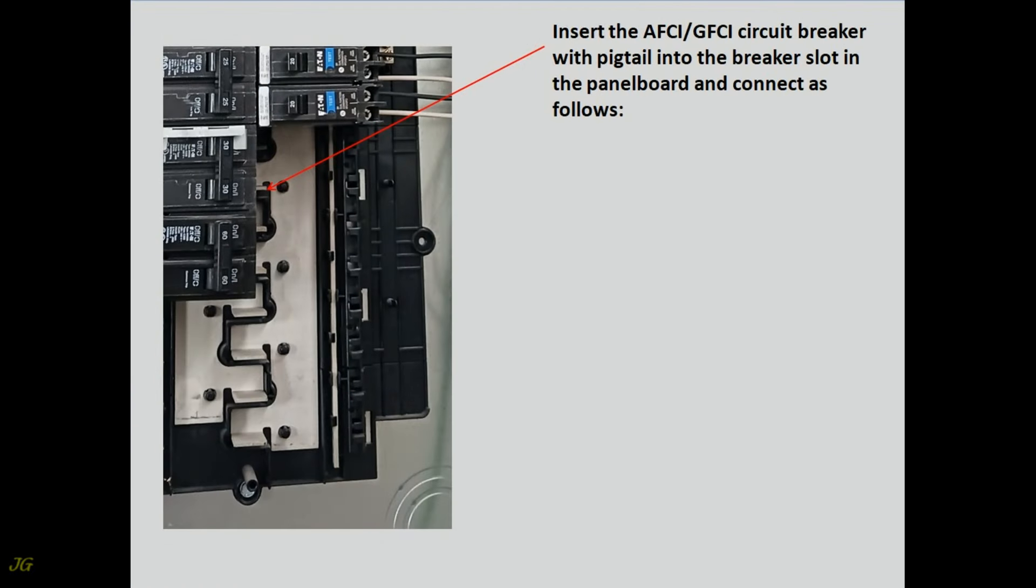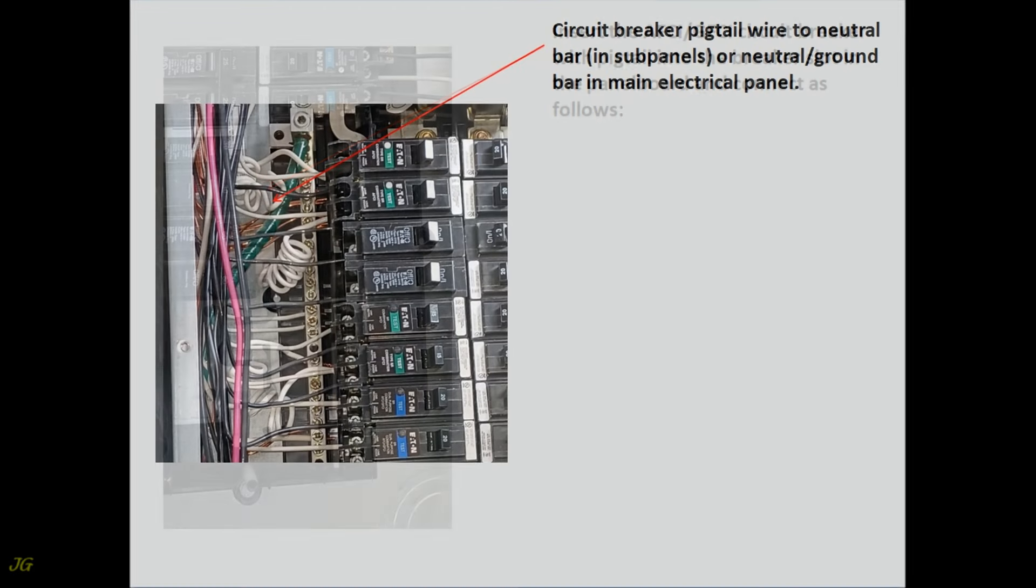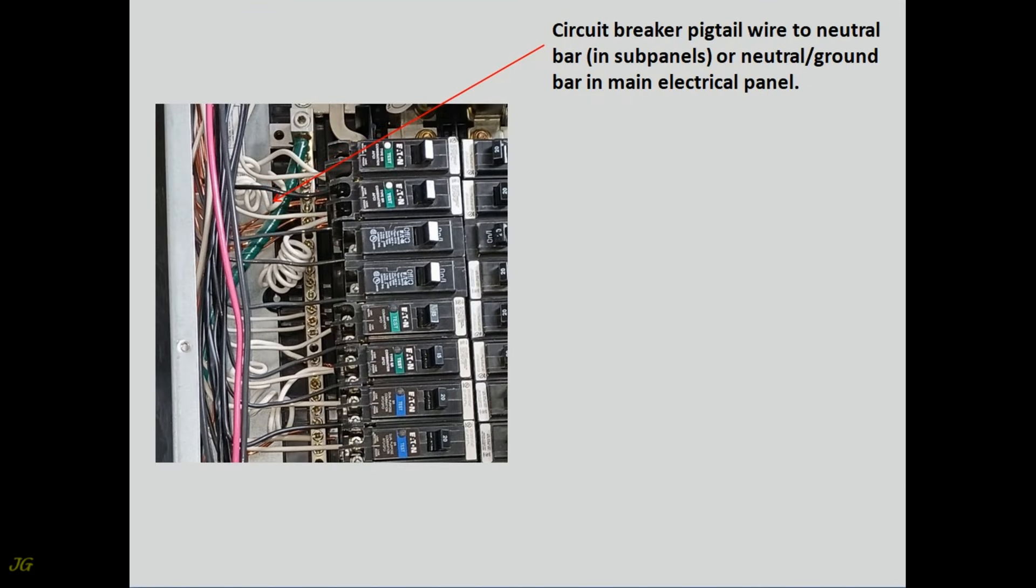Insert the AFCI GFCI circuit breaker with pigtail into the breaker slot in the panel board and connect as follows: circuit breaker pigtail wire to neutral bar in subpanels, or neutral ground bar in main electrical panel.